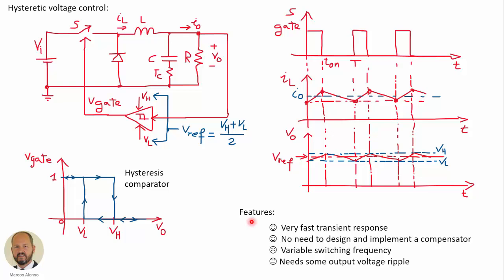Here we have some features of this control method. This is a very fast control method — the transient response is extremely fast. Another advantage is that there is no need to design and implement a compensator, so this is very easy to implement, just measuring the output voltage and sending it into a hysteretic comparator. However, the price we pay is that we will have a variable switching frequency.